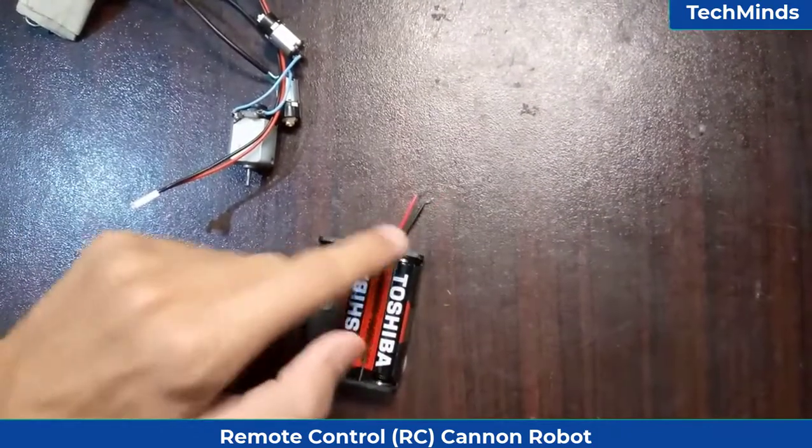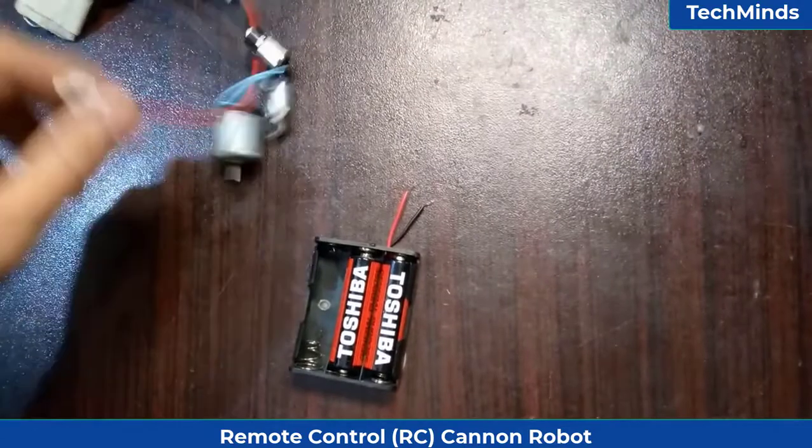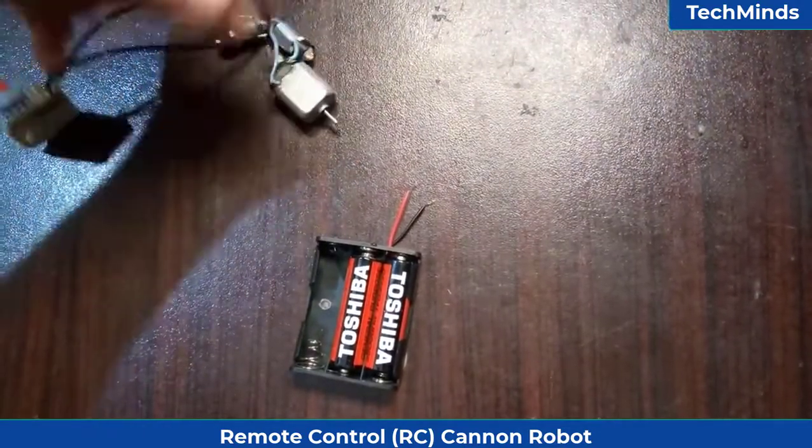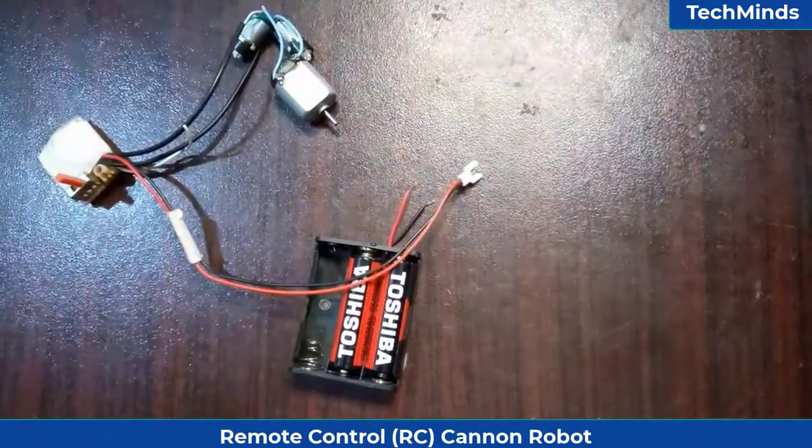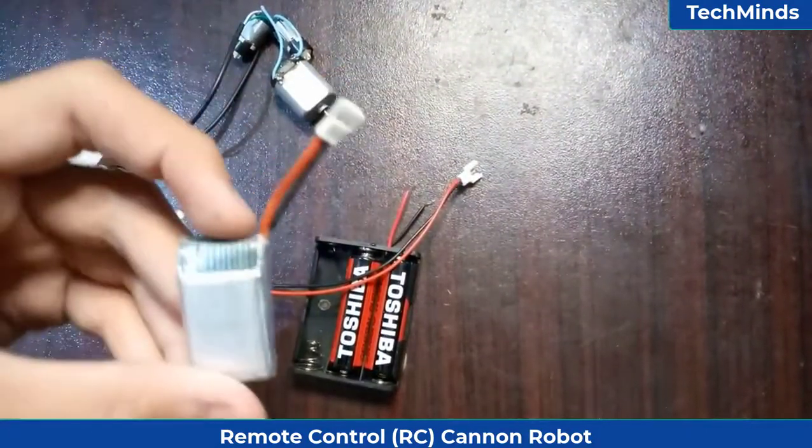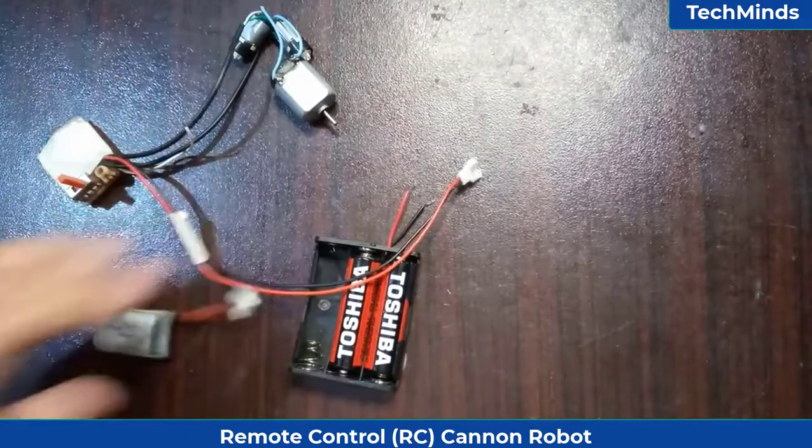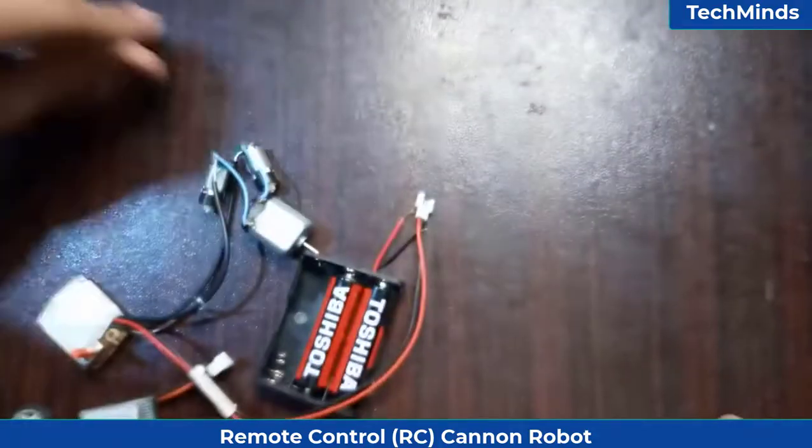Normally the RC comes with a cell pocket, but I connected this 3.7V battery connector. This is the battery. Now you will need these wheels.